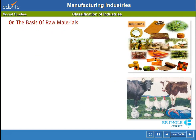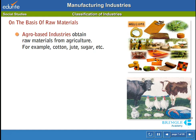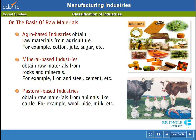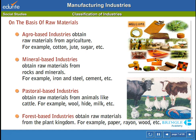On the basis of raw materials: agro-based industries obtain raw materials from agriculture, for example cotton, jute, sugar, etc. Mineral-based industries obtain raw materials from rocks and minerals, for example iron and steel, cement, etc. Pastoral-based industries obtain raw materials from animals like cattle, for example wool, hide, milk, etc. Forest-based industries obtain raw materials from the plant kingdom, for example paper, rayon, wood, etc.